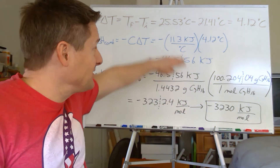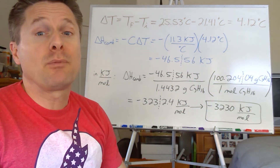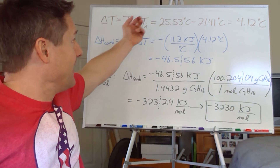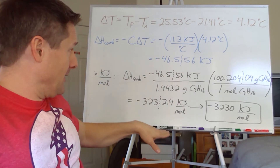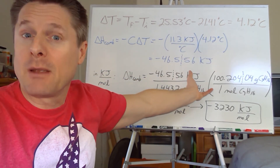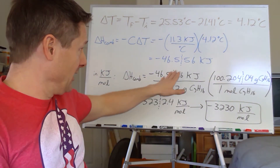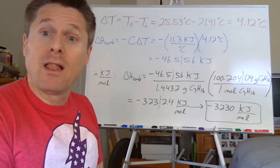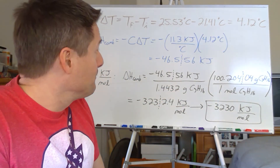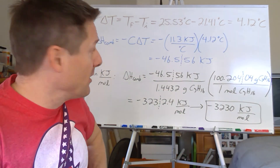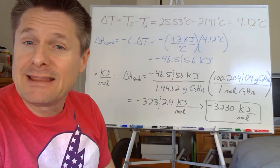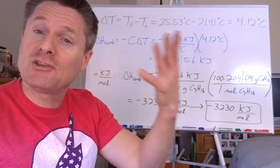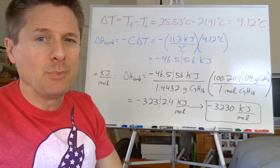So that's how you do bomb calorimetry - not too bad. Watch out: sometimes it just asks for the energy change, sometimes for kJ/mol, so you need the amount of substance. You can also flip the problem - given the heat capacity and energy change, find the initial or final temperature, or given the temperatures and energy, calculate the heat capacity, or find how many grams of a substance were combusted. Most of the time we're solving for the heat of combustion. Next, let's look at coffee cup calorimeters - similar, but with their own twists.